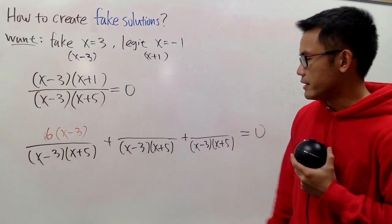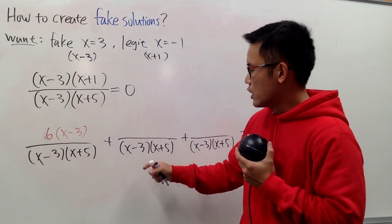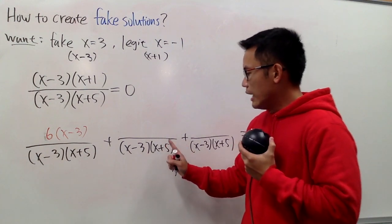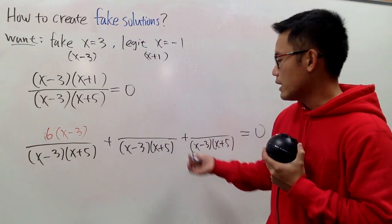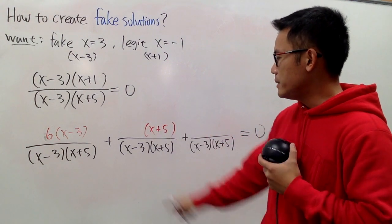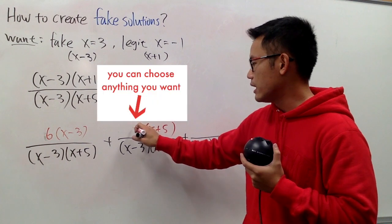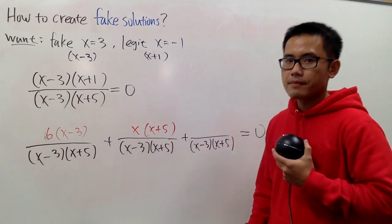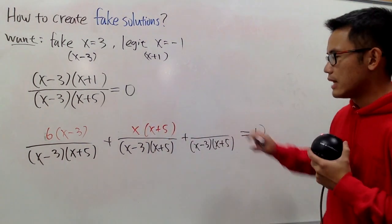For the next one, same idea, I'm going to have what? Well, I want to cancel out x plus 5. I will just have the x plus 5 right here, and maybe I want to have something else on the top, so let me say I want to have x. I will leave this right here as how it is for now.